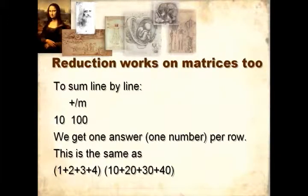To sum line by line, we do plus slash the matrix. We get one answer, or one number, per row. This is the same as doing the sum of the first row, followed by the sum of the second row.